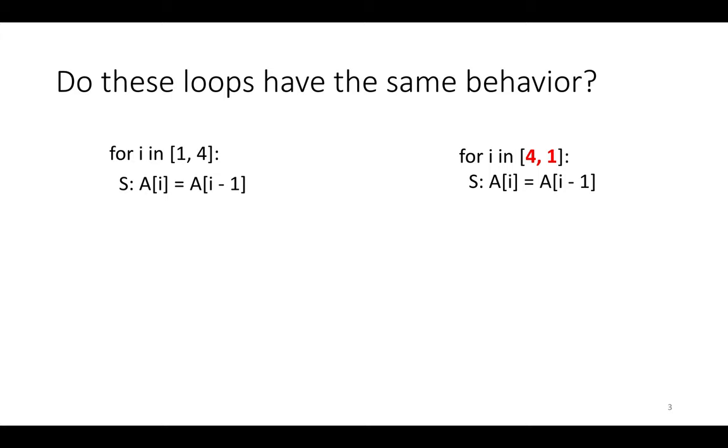So when we reverse the loop, we're really asking, do these loops have the same behavior, the guy on the left and the guy on the right, which has the same statement, but a different for loop surrounding it. So instead of for i in 1 to 4, it's going to be for i in 4 to 1. So we're going to walk backward over the array instead of forward.